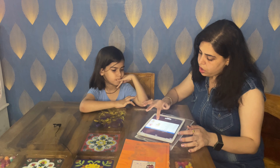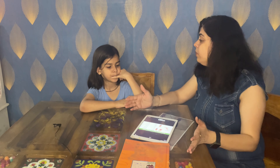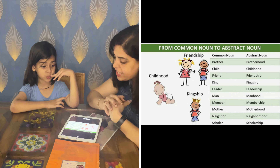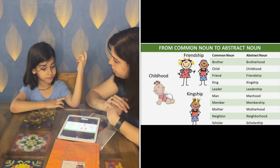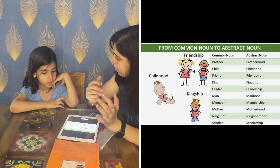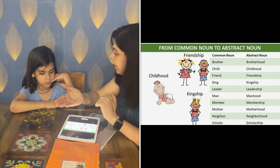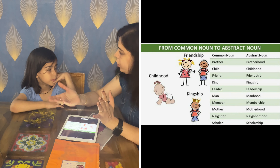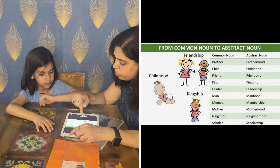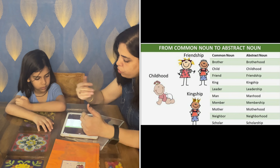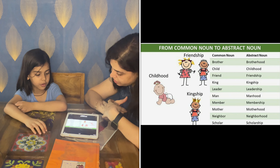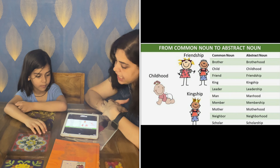Now, common nouns can be converted into abstract nouns. When a common noun represents a quality or state, it converts into an abstract noun. For example: brother, child, friend, leader — these are common nouns that convert to abstract nouns.